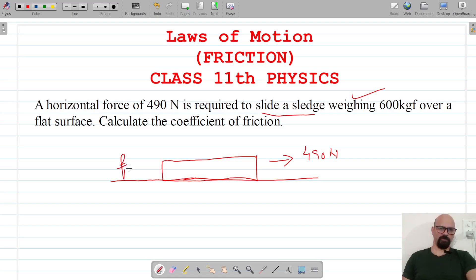The maximum value of the force of static friction, that is the limiting friction, is 490 N because with this force we are able to slide this sledge.